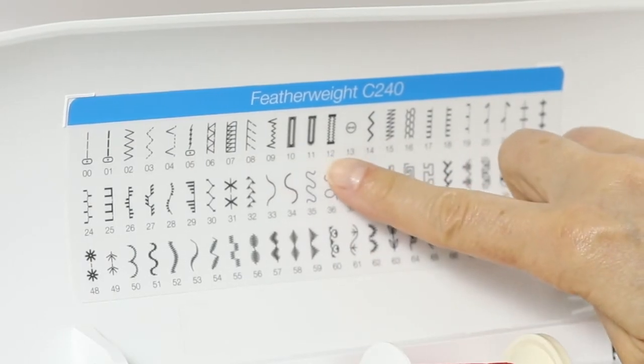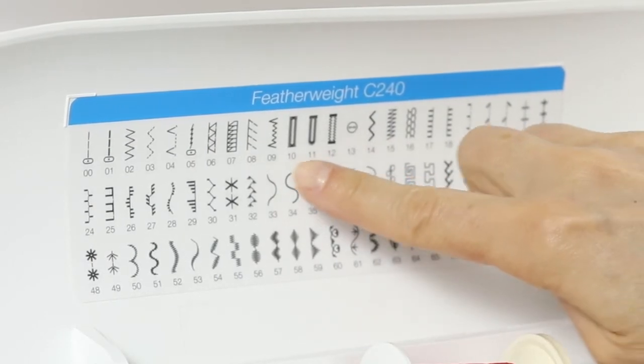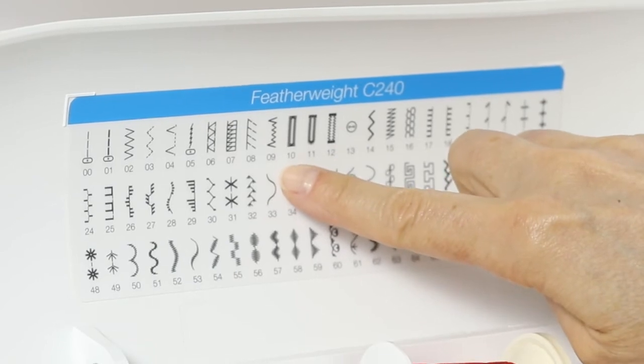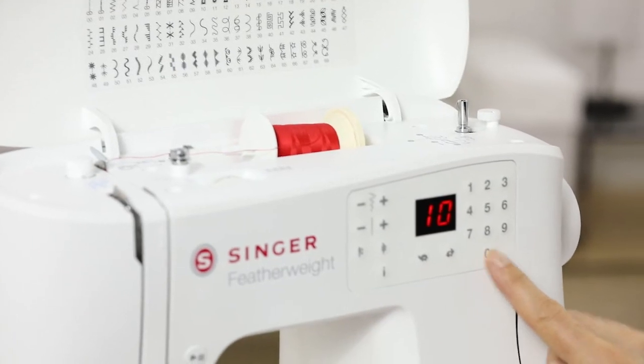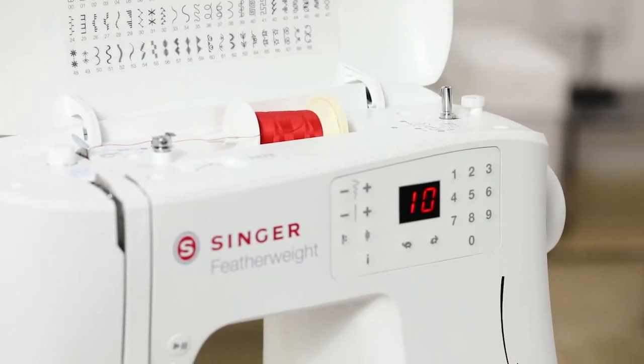I can see that I have three different buttonhole styles to choose from. I'm going to select stitch number 10, which is the bar tack buttonhole. On the front of my machine, I'm going to press one zero, and we're ready to sew.